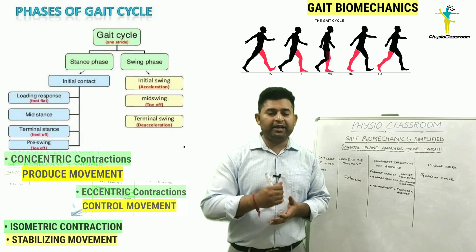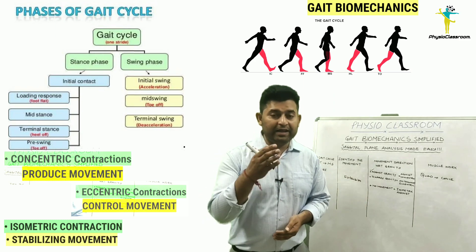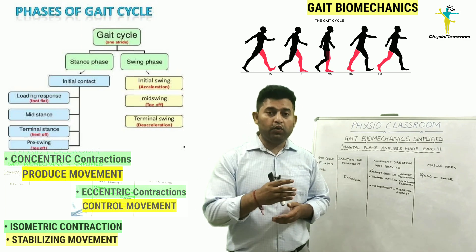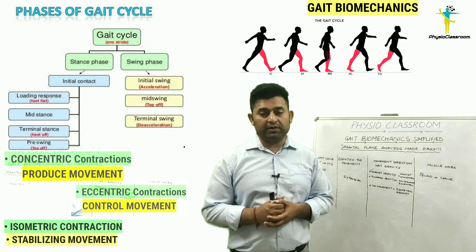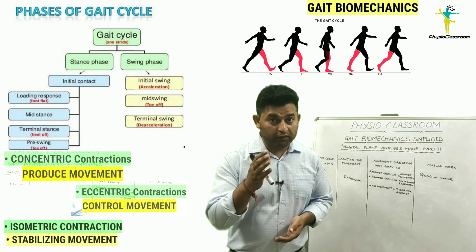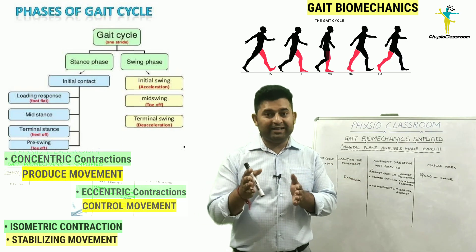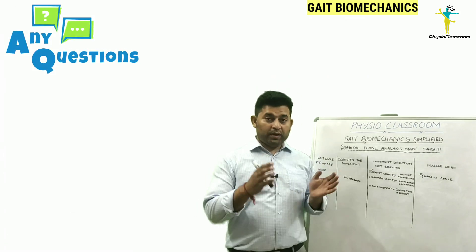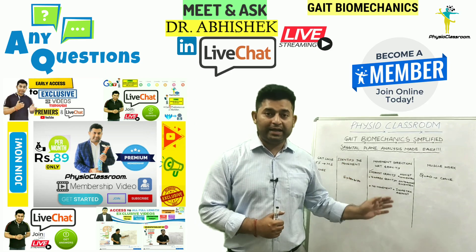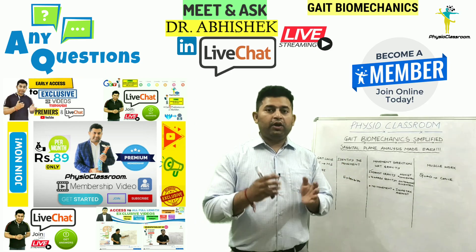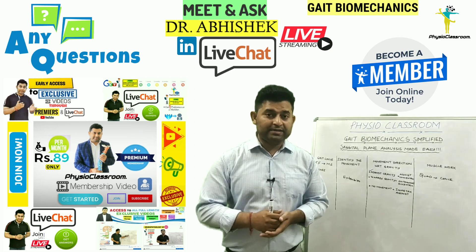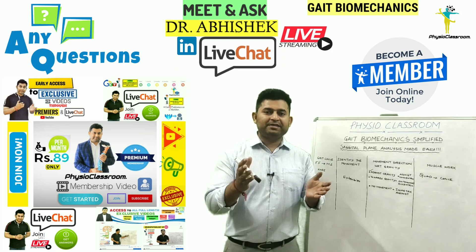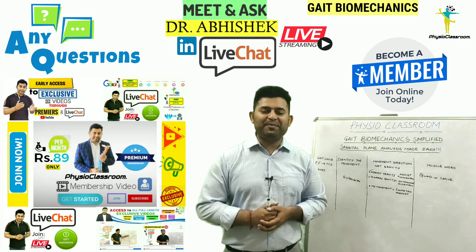By using this concept and answering these two questions about joint movement and its relation to gravity, physiotherapy students will easily perform kinetic analysis of all gait phases. Try going through all the tables of sagittal and frontal plane gait analysis — you'll find it easy to give reasoning for the different types of muscle work: concentric for producing motion, eccentric for controlling motion, and isometric for stabilizing. I sincerely hope this information is helpful. Don't forget to share Physio Classroom videos with friends, colleagues, and peers. Keep learning, keep sharing, and stay connected.